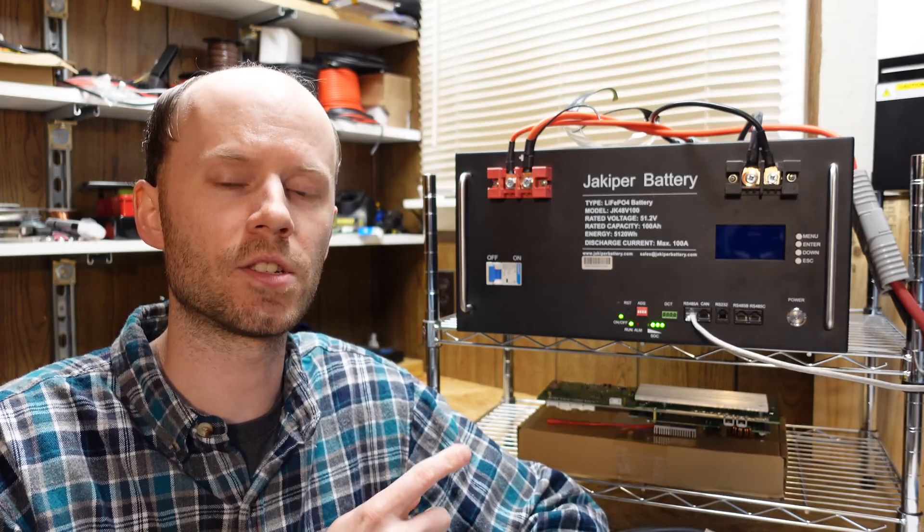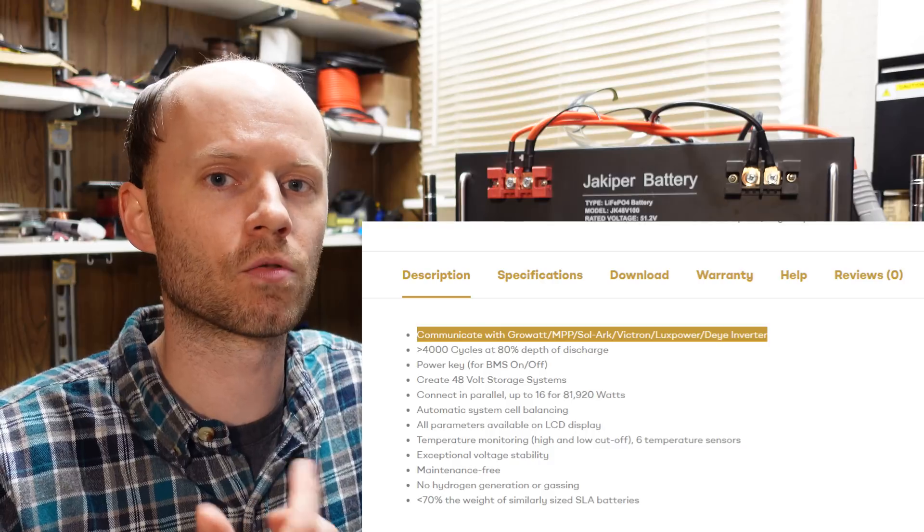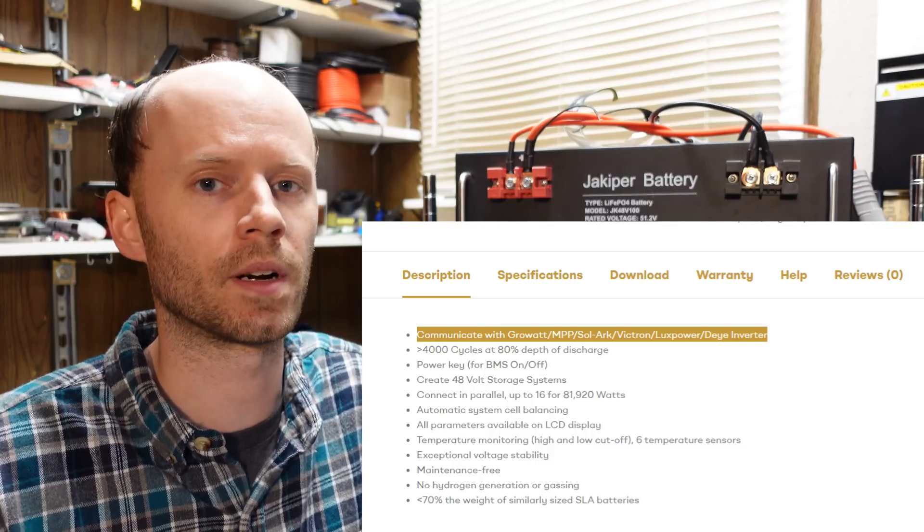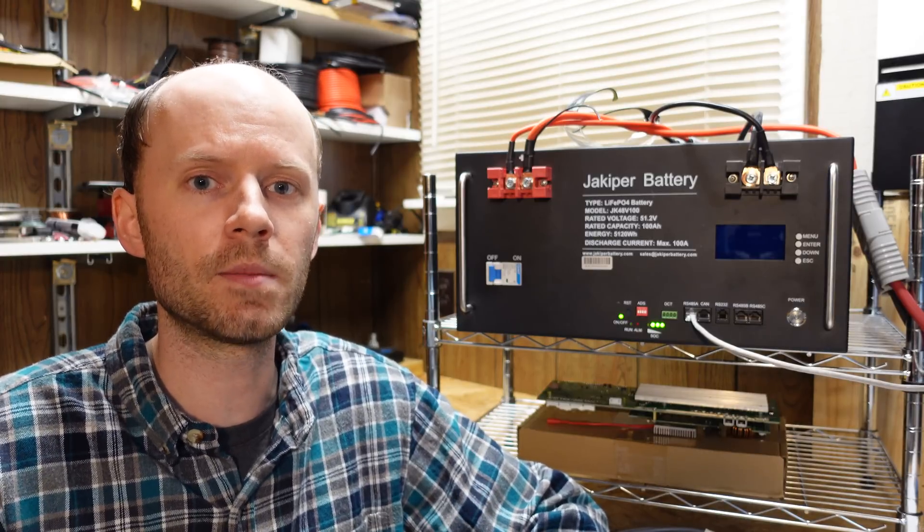So like I said, on the Jakoper website it says this battery supports communications with multiple brand inverters, that be MPP solar, GrowWatt, SolArk, there's a whole list of them there. The problem is that neither Jakoper nor MPP solar have documentation on how to get these two products to interact with each other.